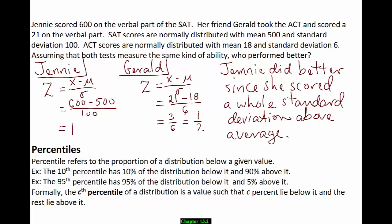Now we're going to talk about percentiles, which are kind of the opposite of getting probabilities associated with the normal distribution. The percentile refers to the proportion of a distribution below a given value. The 99th percentile means 99% scored less than you. The 10th percentile has 10% below it and 90% above it. In general, the cth percentile is a value such that c% lies below it and the rest lies above it.